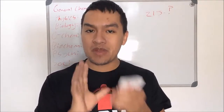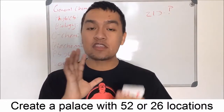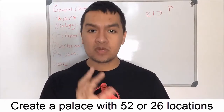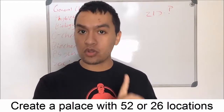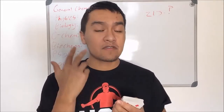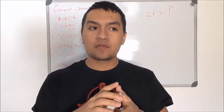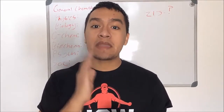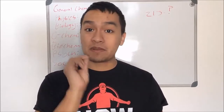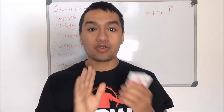Now let's get to the memorization. You have to create a memory palace with either 52 locations or 26. With 52 locations, you place one card per location. With 26 locations, you place two cards per location. When you have multiple images per location, you have to make sure the order of your images is completely straight, because if you mix them up you'll get the wrong order for the deck.